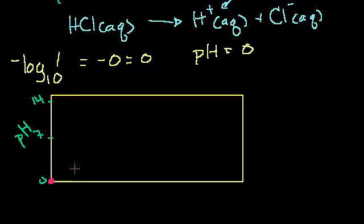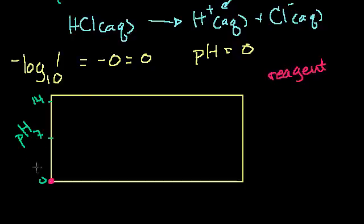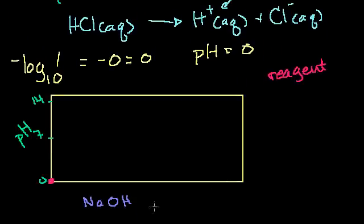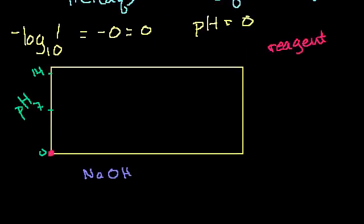I have an acid here, and the reagent — the titrant — that I'm going to add to it: in this case, my solution already has hydrochloric acid in it and the pH is already 0. But what I'm going to do is add a strong base — sodium hydroxide. That's my favorite strong base. Let's say I have a solution prepared ahead of time — a one molar solution.